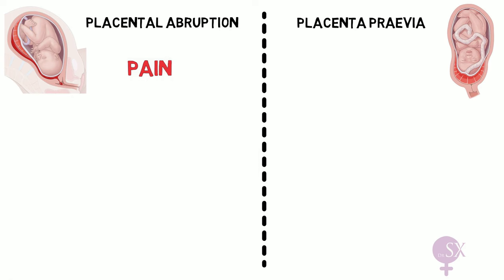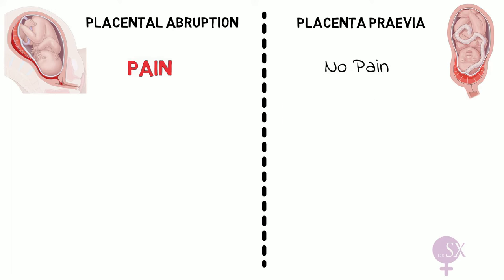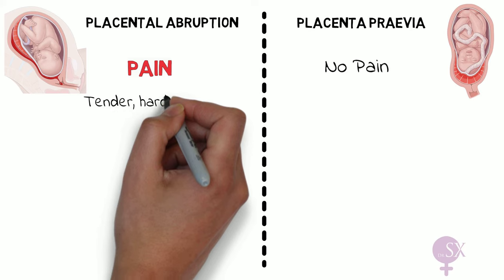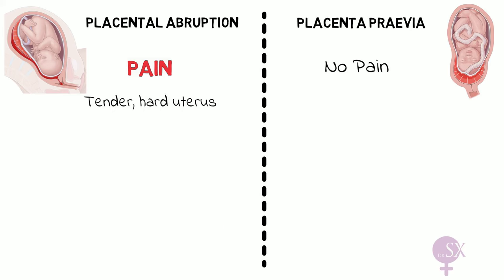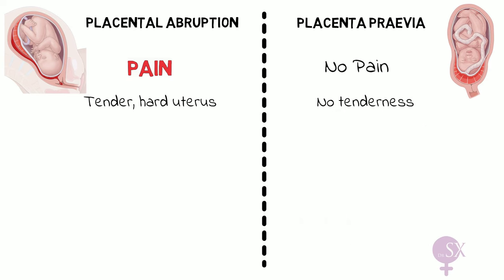In placental abruption, the condition is associated with a significant amount of pain that is constant in nature, irrespective of contractions. In placenta previa, on the other hand, there is no pain. Therefore, in placental abruption the uterus will be tender and sometimes hard, while there is no tenderness in placenta previa.